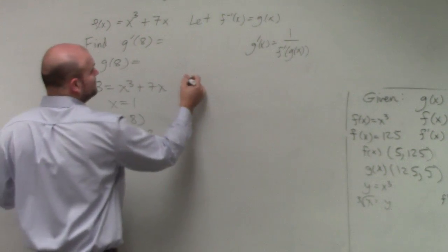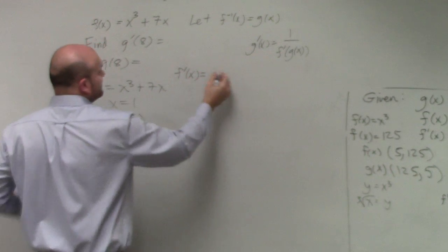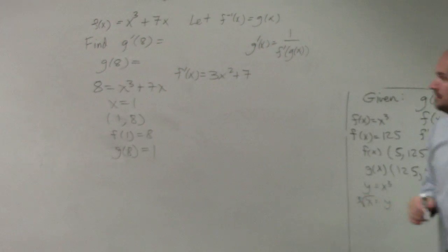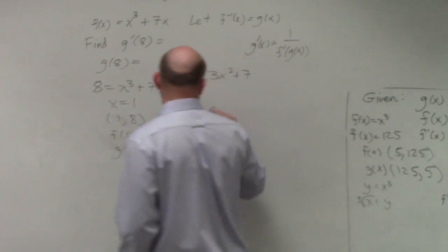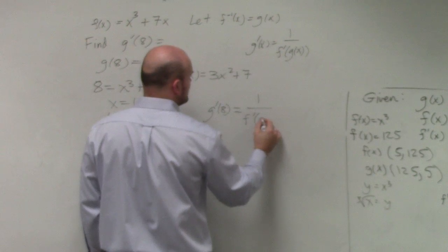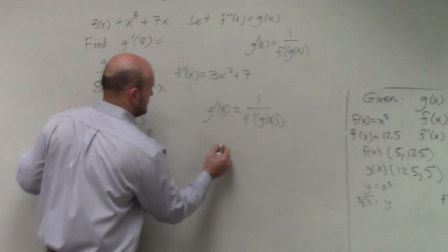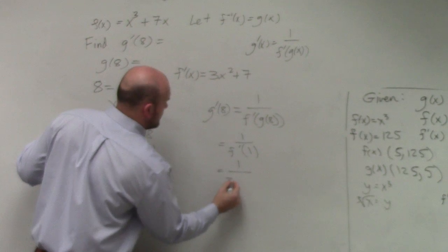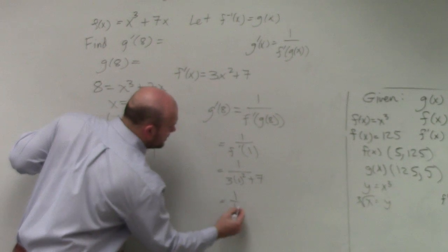Then I need to find f prime, because we know that our formula has f prime. So f'(x), I can do that: 3x² + 7 is my f'(x). And therefore, I need to find g'(8). That's going to be 1 over f'(g(8)). g(8) is 1. So therefore, that answer is 1/10.